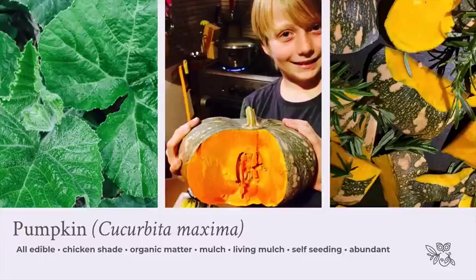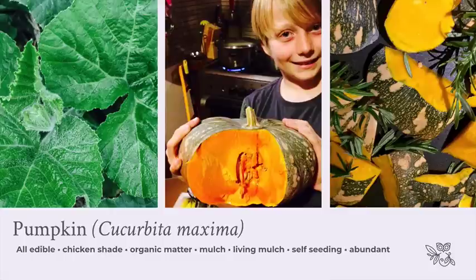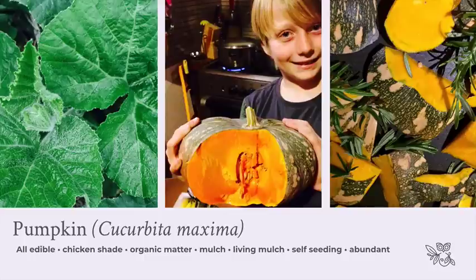Pumpkin leaves are also fantastic grown up and over fences to create shade. I often use them to grow over the edge of my chicken run to shade the chickens in summer and give them something to peck on. As pumpkins grow they produce an enormous amount of organic matter, which I add into compost and use as mulch — both as a living mulch and a dried mulch. When finished, I bundle the whole lot up, lay it down on the ground, let it rot in situ, then plug in a few seeds among it. It's a no-dig, self-mulching system.